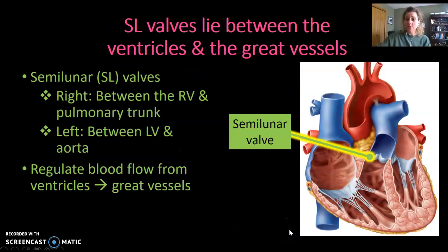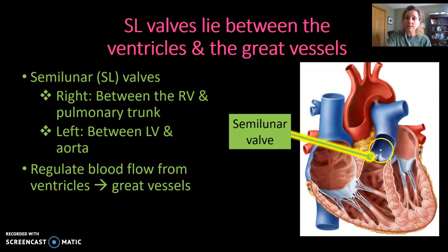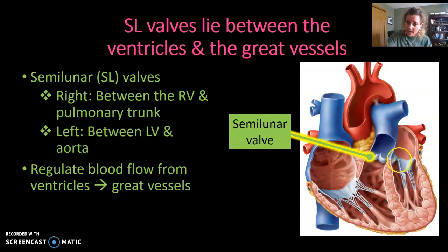We have two other valves inside the heart: the semilunar valves, which look like crescent or half-moon shapes. One divides the right ventricle from the pulmonary trunk — this is the pulmonary valve, a semilunar valve. The other is the aortic valve, also a semilunar valve, which divides the left ventricle from the opening to the aorta. The aorta passes behind the pulmonary trunk.